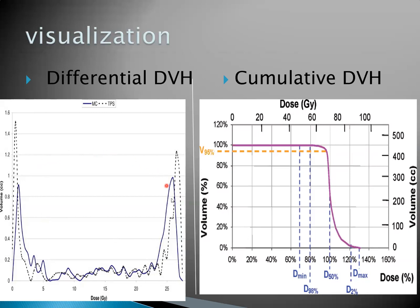In the cumulative DVH, it is very important to understand the concept of D-minimum, D-50, D-maximum, D-98, and D-2. These are the ICRU requirements — the ICRU prescribing and reporting requirements — that mandate reporting these doses at specific volumes.